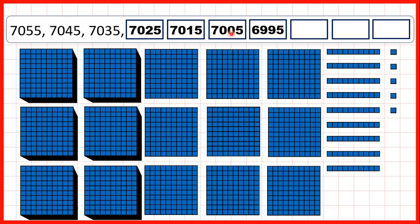And again, that makes sense, because we know the number before 700 — if we ignore our ones digit — the number before 700 is 699. So if we're counting back in tens, the number before 7,005 is 6,995. We were subtracting ten, but because we had zero in our tens and in our hundreds, we needed to subtract one from the thousands and give ourselves nine as our hundreds and tens place.